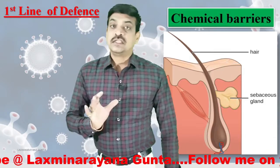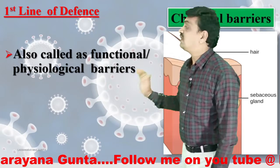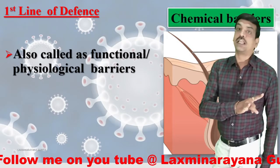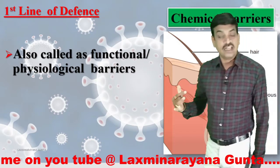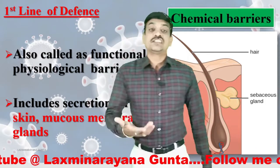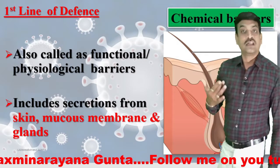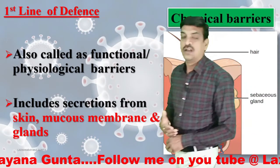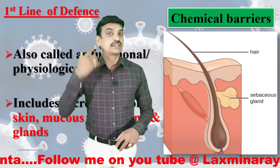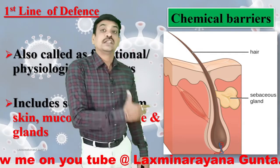Chemical barriers are also called functional or physiological barriers, whereas physical barriers are called structural or anatomical barriers. Chemical barriers include the secretions of the skin and mucous membrane and other glands. The salivary glands secrete saliva, the sebaceous glands secrete sebum, and the ceruminous glands secrete cerumen — the earwax.